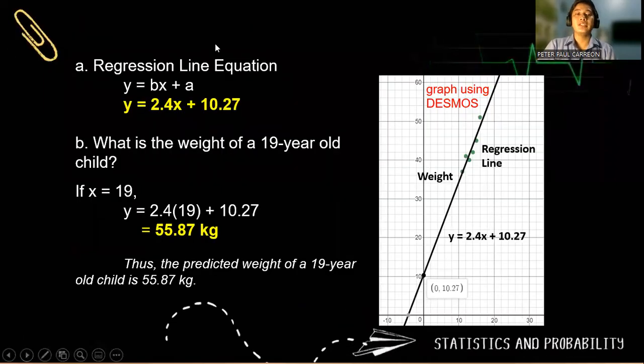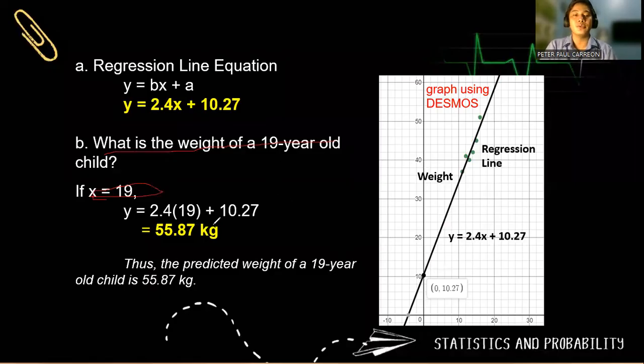Step number three, we write now the regression line equation, which is y = bx + a. So that would be y = 2.4x + 10.27. And using decimals, this is how the regression line would look like with this equation. And to answer question b, what is the weight of a 19-year-old child? So if x is 19, we will use the regression line that predicts the value. So when the age of a person is 19 years old, the predicted weight will be 57.87 kilograms. So thus, this is the conclusion. Do not forget to put the conclusion on your answers. The predicted weight of a 19-year-old child is 55.87 kilograms.